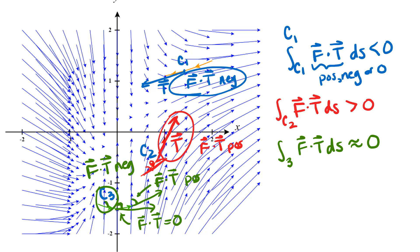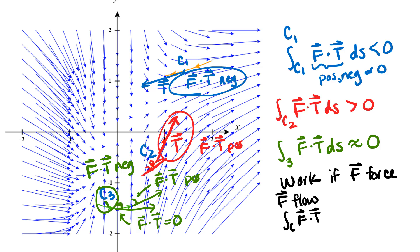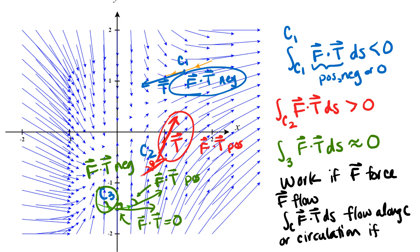This integral is called a work integral when F is a force. If F represents fluid flow or air flow, then the same integral — F dot T ds integrated along the curve — is called flow along the curve, or sometimes circulation. Circulation usually refers to the case where the curve is closed, meaning it forms a complete loop that returns to its starting point. So I sometimes call this the work/flow/circulation integral; it's really all the same integral with different names in different contexts.